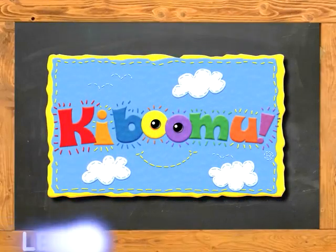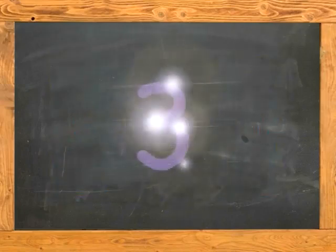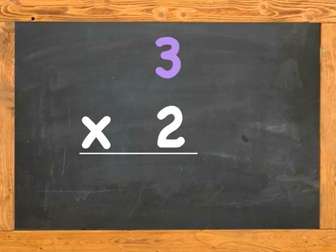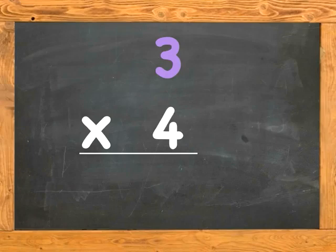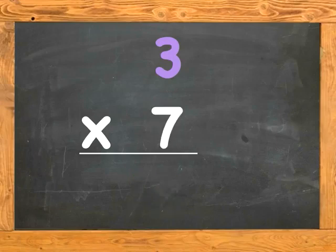Multiplication. Let's multiply with 3. 3 times 1 is 3, 3 times 2 is 6, 3 times 3 is 9, 3 times 4 is 12, 3 times 5 is 15, 3 times 6 is 18, 3 times 7 is 21.